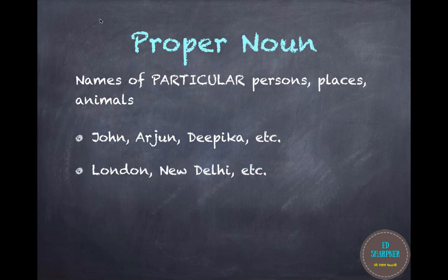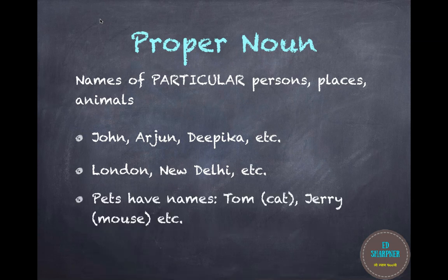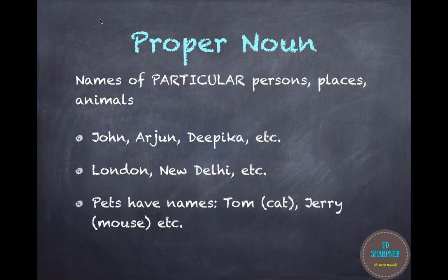For places, like London, New Delhi, etc. And pets — not all animals have names, but pets have names. Then they can be thought of as particular nouns, like Tom Cat and Jerry Mouse, etc.